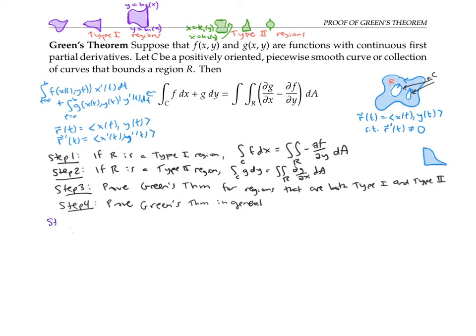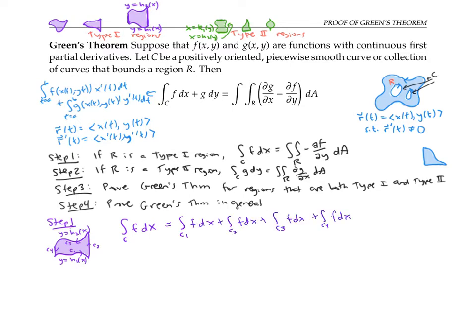Let's start with step one and a type one region. To compute the line integral of f dx, we need to parameterize our boundary curve. I'm going to break this boundary curve up into four pieces — C₁, C₂, C₃, C₄ — oriented positively with respect to the region. My line integral is going to be the sum of the four line integrals over these four different curves. I'll compute these one at a time. For C₁, the easy way to parameterize it is to use the copycat parameterization: x equals t, y equals h₁(t). So x'(t) equals one, and y'(t) equals h₁'(t).